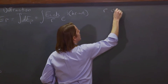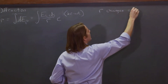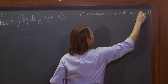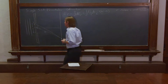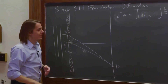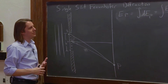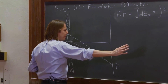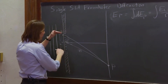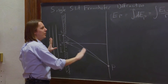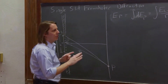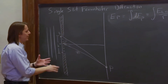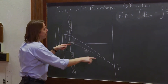So R changes a small amount. This is the tricky part of this calculation. R does change in this integral when you change S, but it doesn't change by much. The screen is really far away — far away compared to the width of the slit and the wavelength. Since it's far away, the change in R is small, so the amplitude is not affected very much. For the amplitude, we're going to treat that as a constant R, and we'll just put in the value for the middle of the slit.